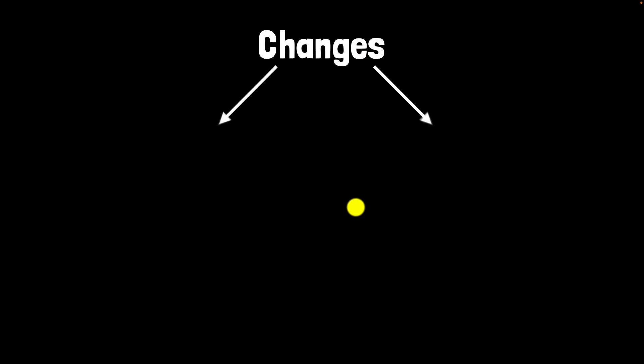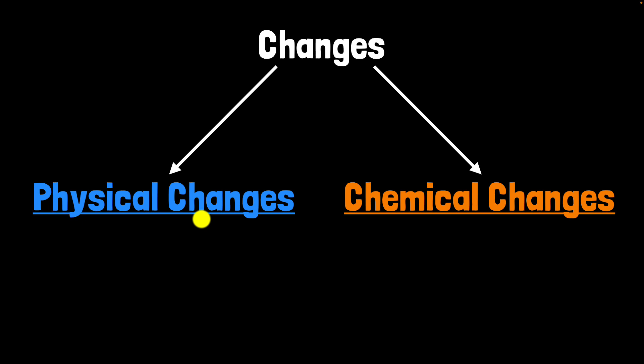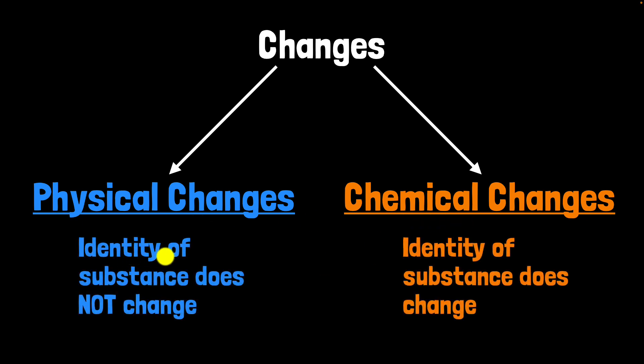Changes can be classified into two categories. We have physical changes and chemical changes. Physical changes are the one where the identity of the substance does not change. Chemical changes are the ones where the identity of substance does change. So in this video, we'll focus mostly on the physical changes with lots and lots of examples.